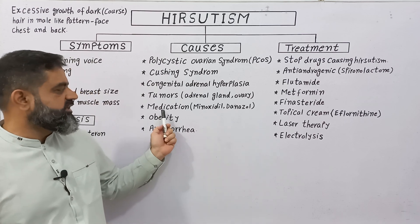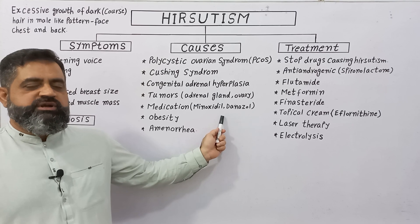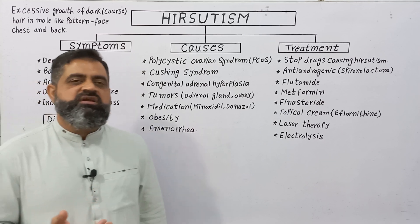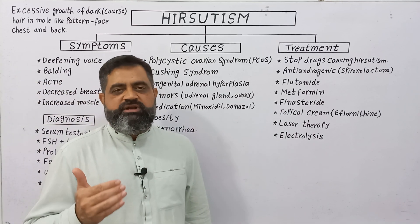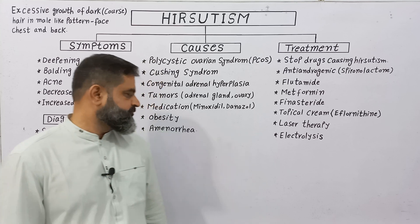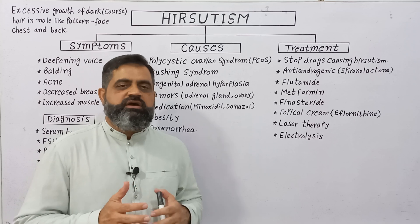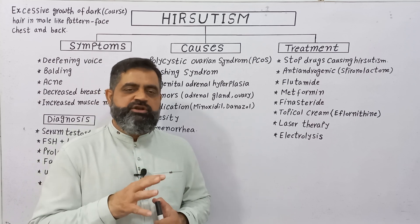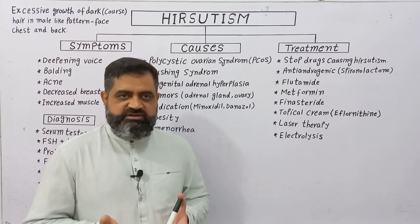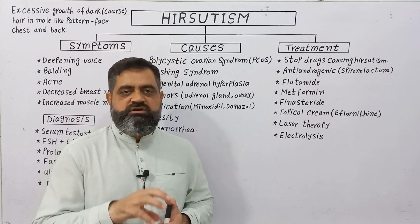Certain medications like minoxidil and danazol — when used excessively — can also lead to hirsutism. Obesity is also a major factor, which can lead to type 2 diabetes, insulin insensitivity, and then hirsutism. Amenorrhea, oligomenorrhea, dysmenorrhea, and infertility are also symptoms related to hirsutism. Doctors determine the underlying cause based on blood tests, MRI, or ultrasound.